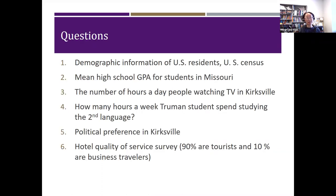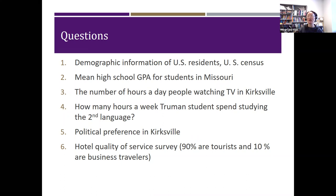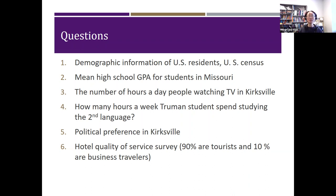The Census is another example — demographic information of U.S. residents. The American government tries to collect all information from the whole population, but one criticism is that while trying to get information from everyone, we're missing particular groups, such as homeless people, very poor people without an address, or people who live in America without a legal address. So it's not really representative of the whole population.